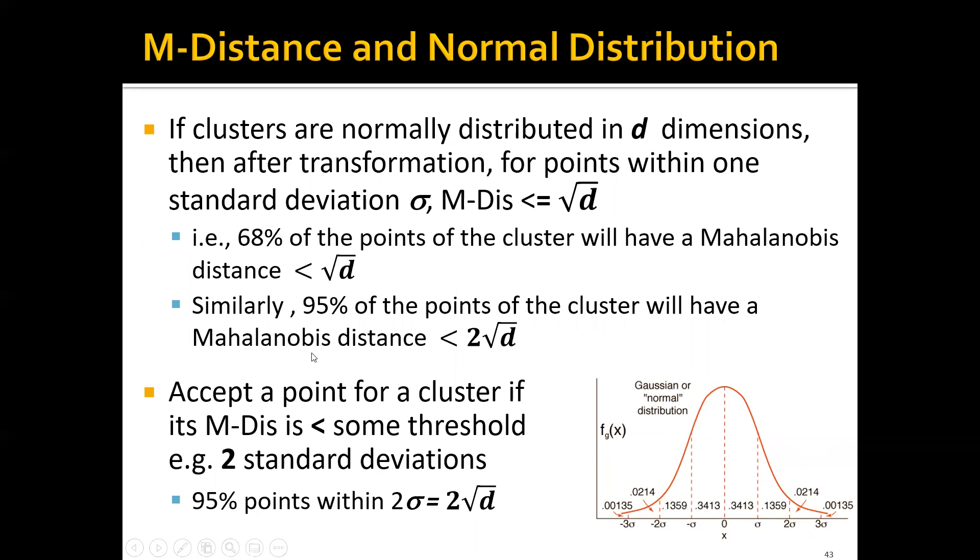So that means similarly, 95 percent of the points of the cluster will have an M-distance smaller than 2 square root d. So basically, you can accept a point for a cluster if its M-distance is smaller than some threshold, for example, two standard deviations, which is 2 times square root d.